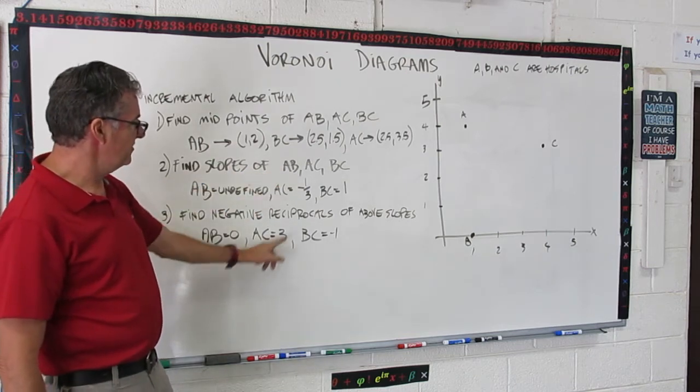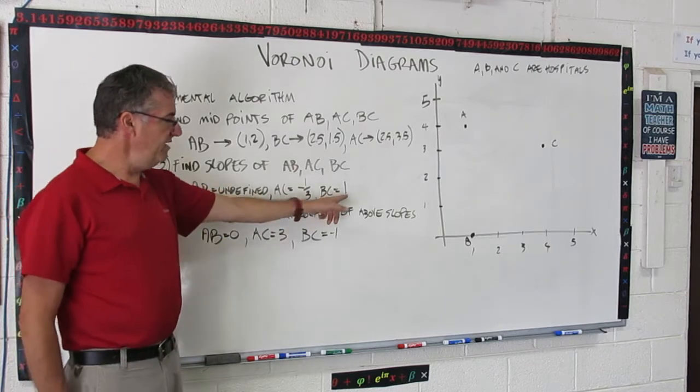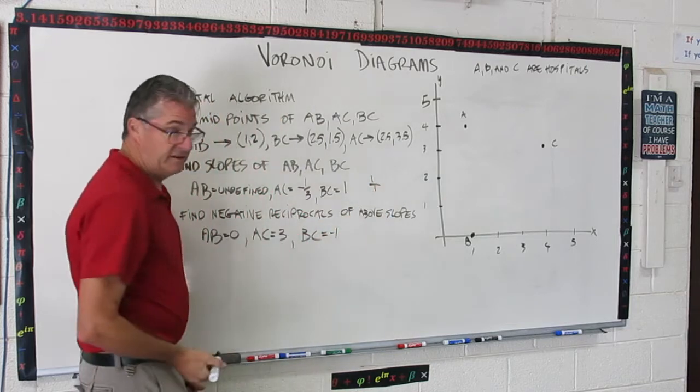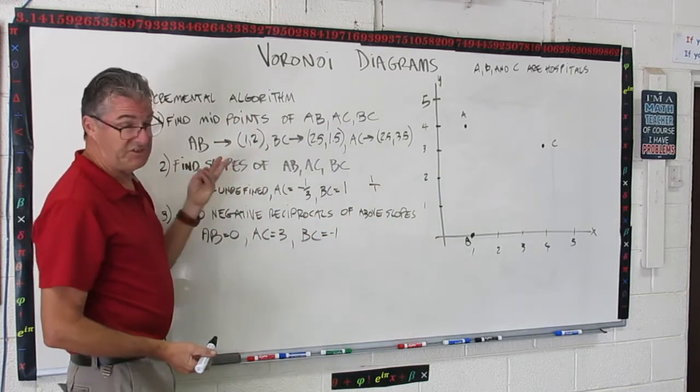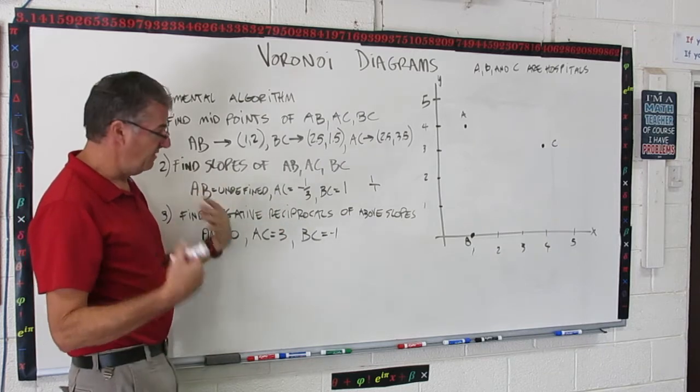The negative reciprocal for AC is three, because we flip the fraction, change the sign, that makes that to three. Now, one is kind of interesting. One is one over one, so if you take the reciprocal of that, that's still one over one, change the sign, it's negative one over one, which is negative one.